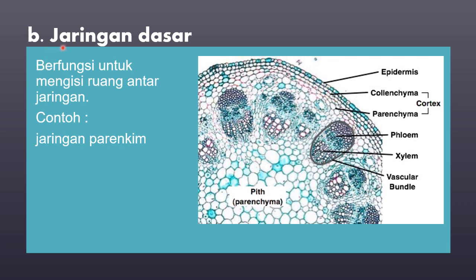Jaringan dewasa yang kedua yaitu jaringan dasar. Jaringan dasar berfungsi untuk mengisi ruang antar sel. Contoh jaringan dasar yaitu jaringan parenkim. Jika kamu lihat pada gambar ini, ini merupakan struktur anatomi batang yang kita amati di bawah mikroskop. Ini merupakan bagian dari jaringan parenkim. Jaringan parenkim ini merupakan salah satu contoh dari jaringan dasar, berfungsi untuk mengisi ruang antar jaringan.